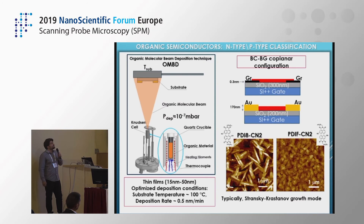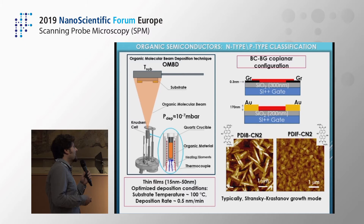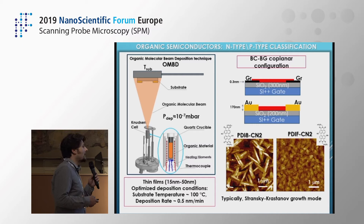There are quite a few deposition techniques; for the experiments I will show you, we employed organic vapor beam deposition, which is simply thermal sublimation of the material. We fabricate typically very thin films of those materials. The morphology is well known — we are talking about a wetting layer plus island morphology, slightly different according to the material used.